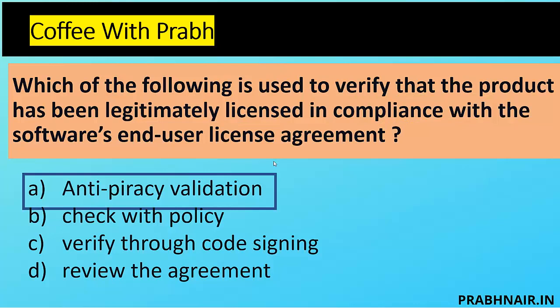The answer is A — anti-piracy validation. It is an online check: whenever you take updates, vendors scan your application to see whether it is compliant with their policies, and only then will they accept or allow the download of updates. Anti-piracy validation is a very important process and technology used for online validation of an application. Option A covers B, C, and D as well.